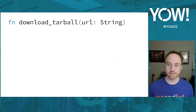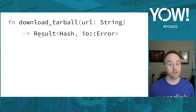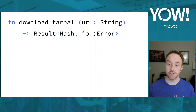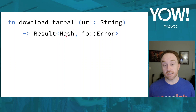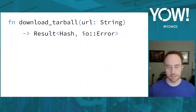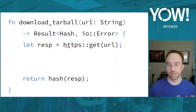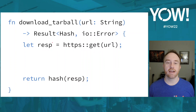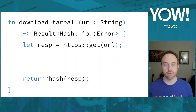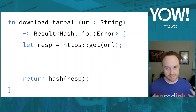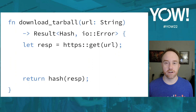The function is called download_tarball. It takes a URL as a string argument and returns a Result of either a Hash or an IO error. If successful, it returns a SHA-256 hash of the tarball contents; if unsuccessful, it returns an IO error — for example if the network is down or you don't have write permissions. The body does an HTTPS get on the URL, does some work in between including unpacking, and then returns the hash of the response body.